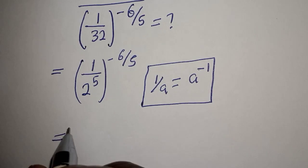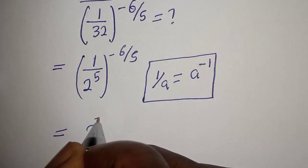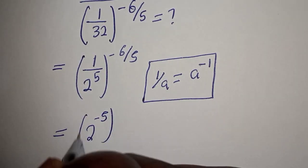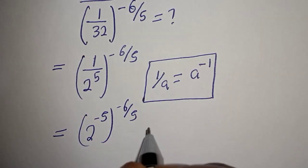So this can be written as 2 raised to the power of minus 5, to the power of minus 6 over 5.